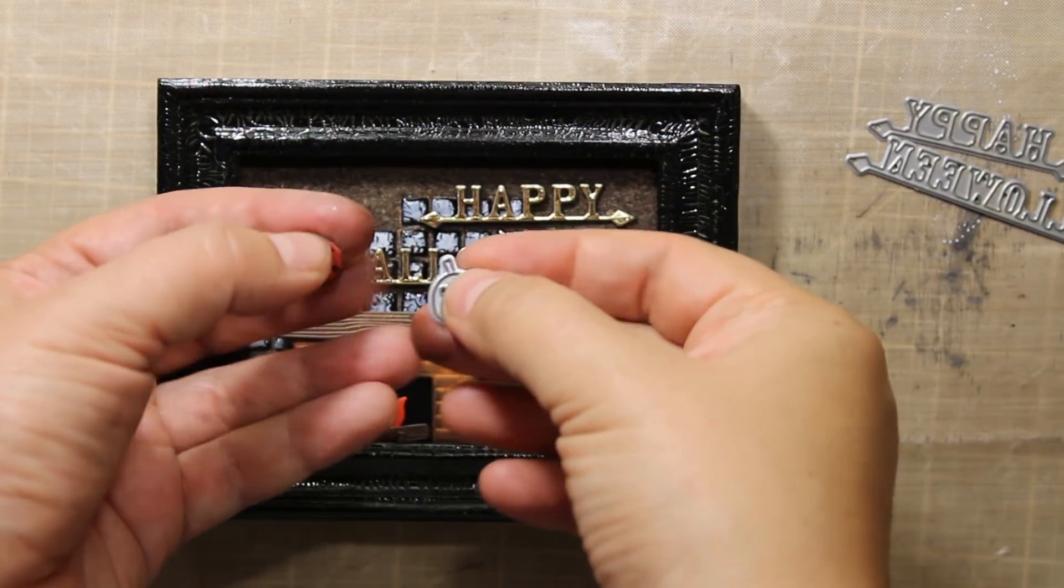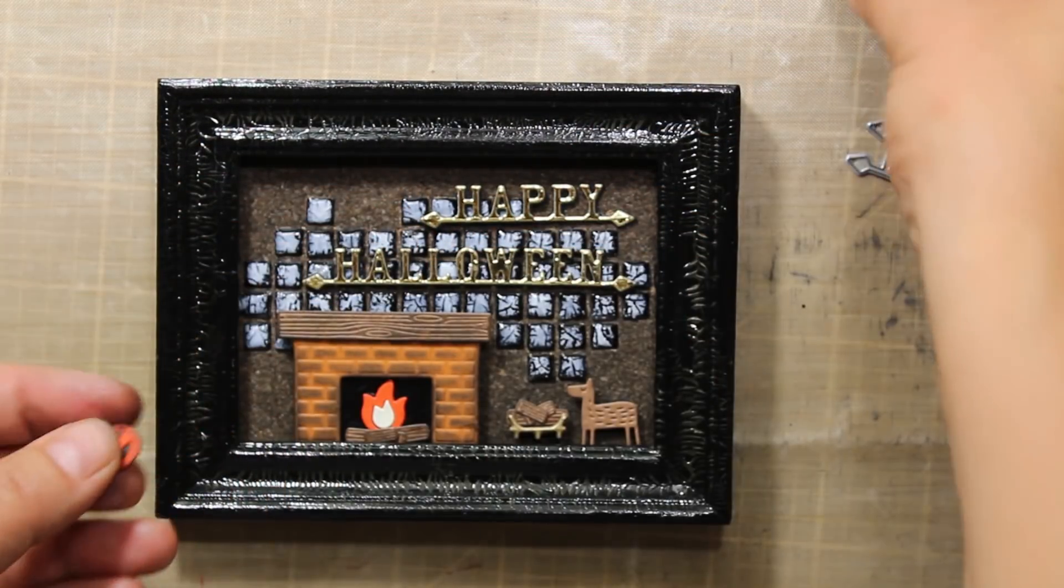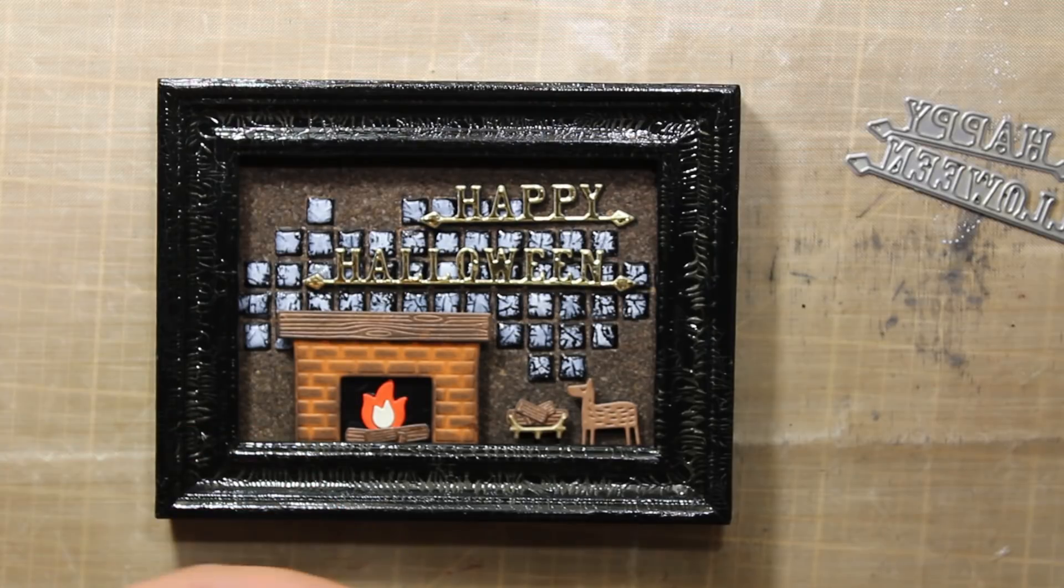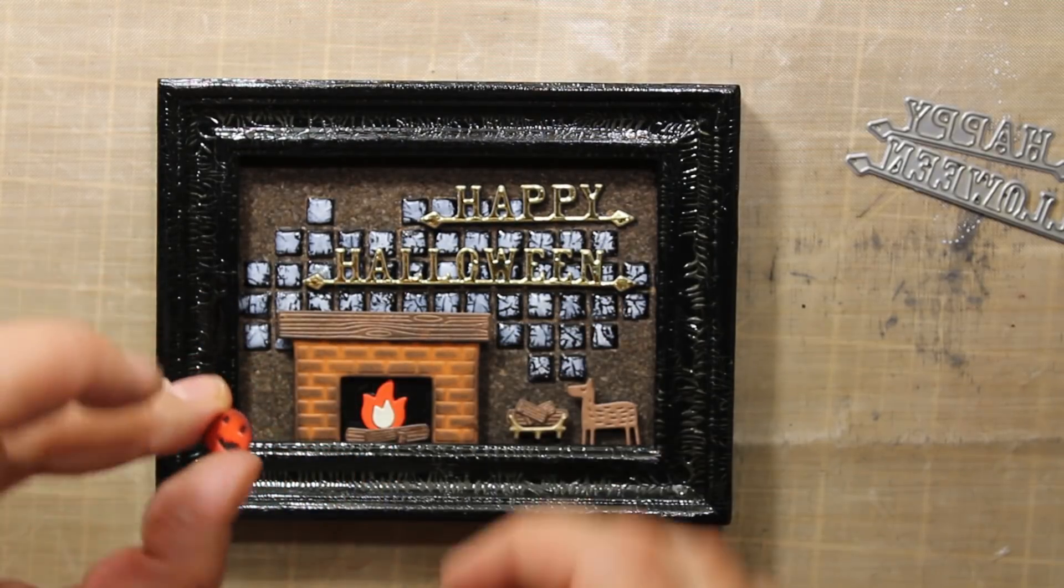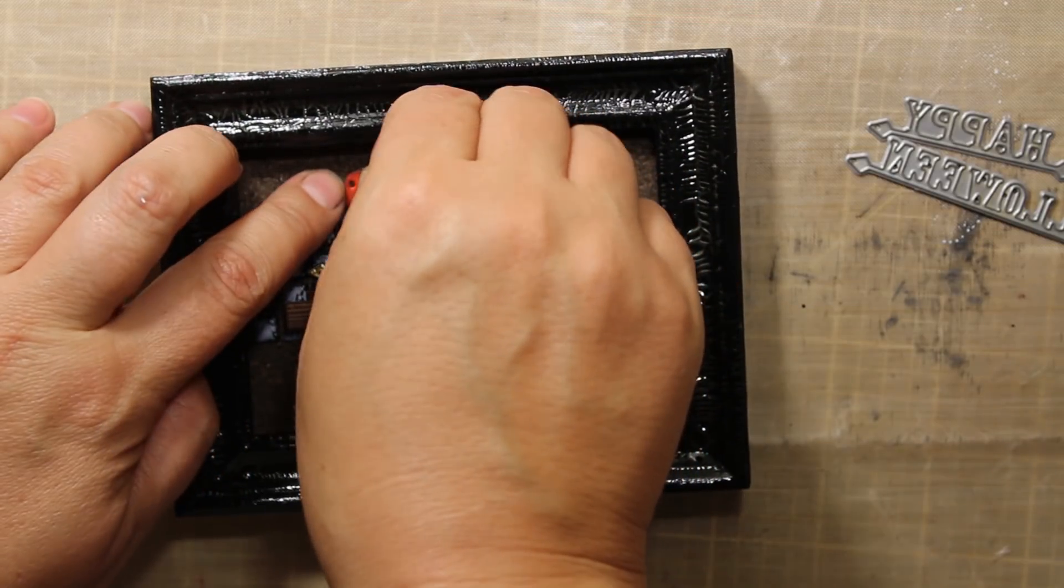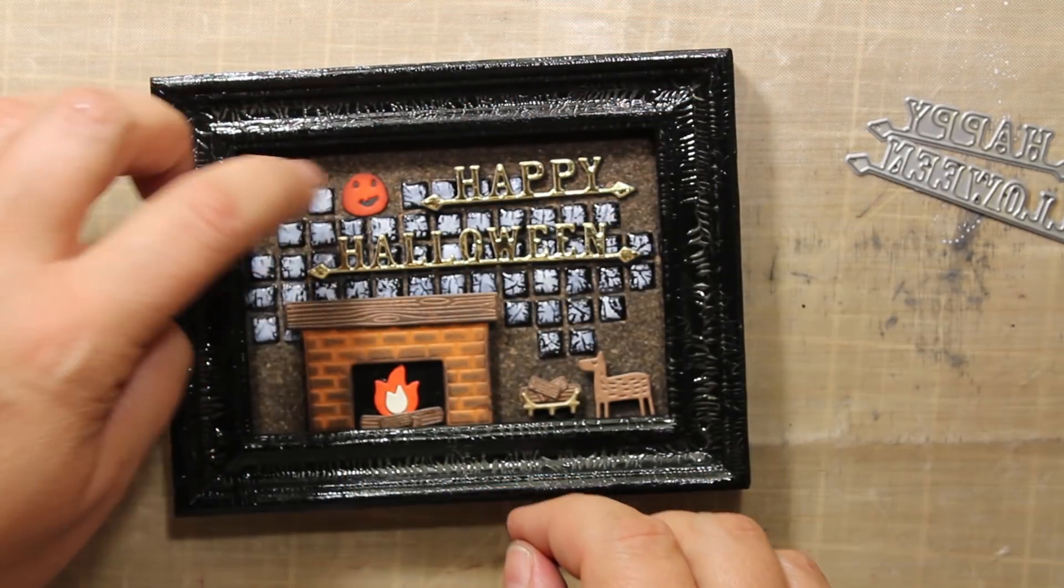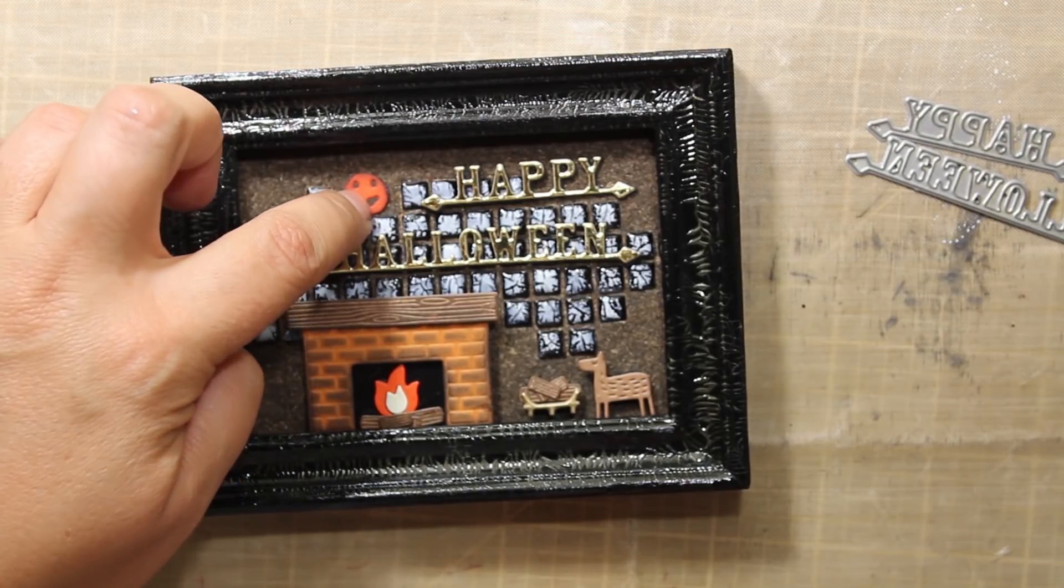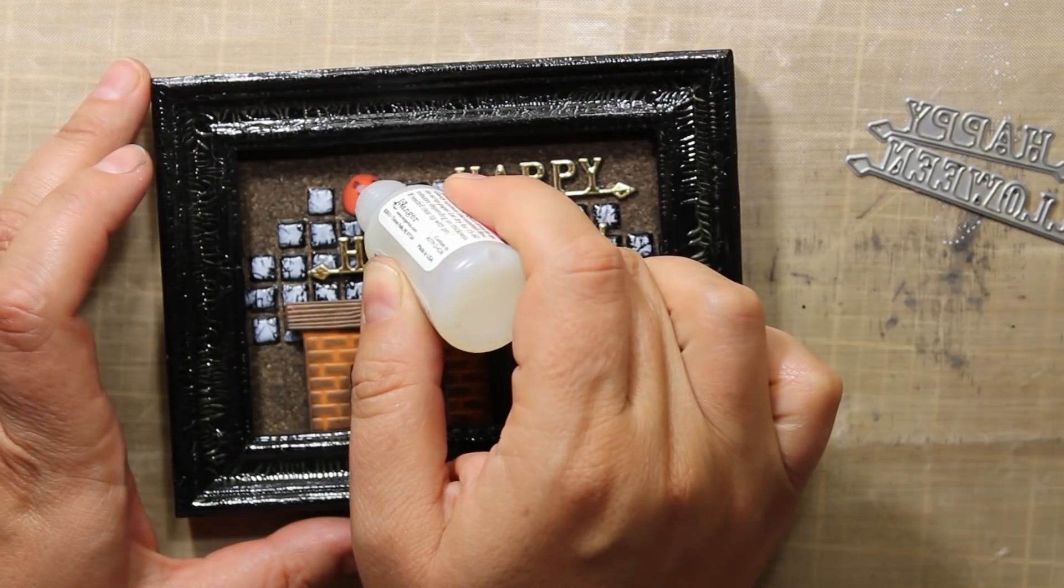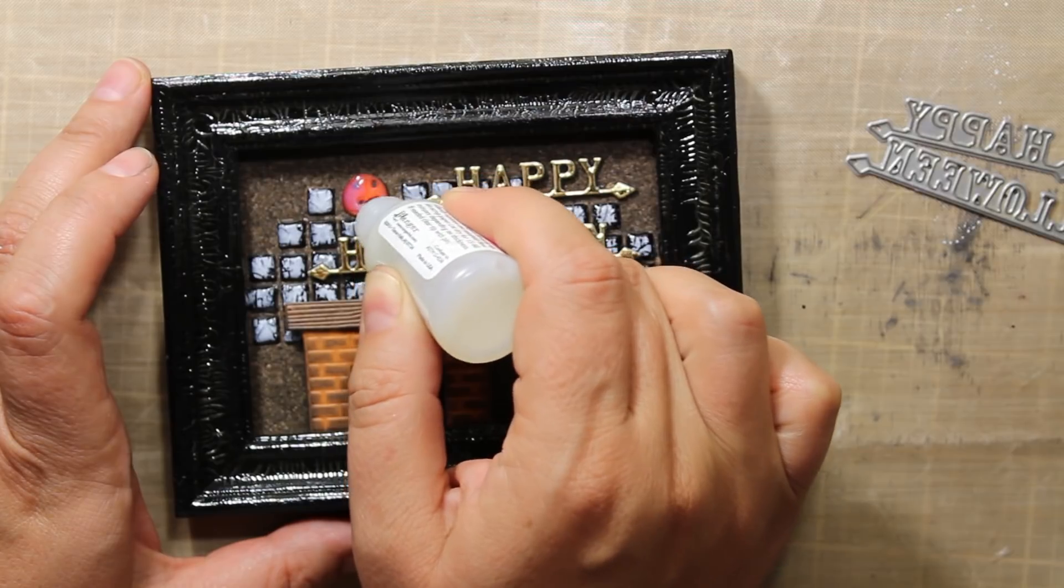The last little detail I'm going to add is this tiny jack-o-lantern also by Poppy Stamps. I'm attaching it above the tiles as if it's sitting on a shelf. Then I'm going to cover it up with the glossy accents, let it dry and my project is finished.